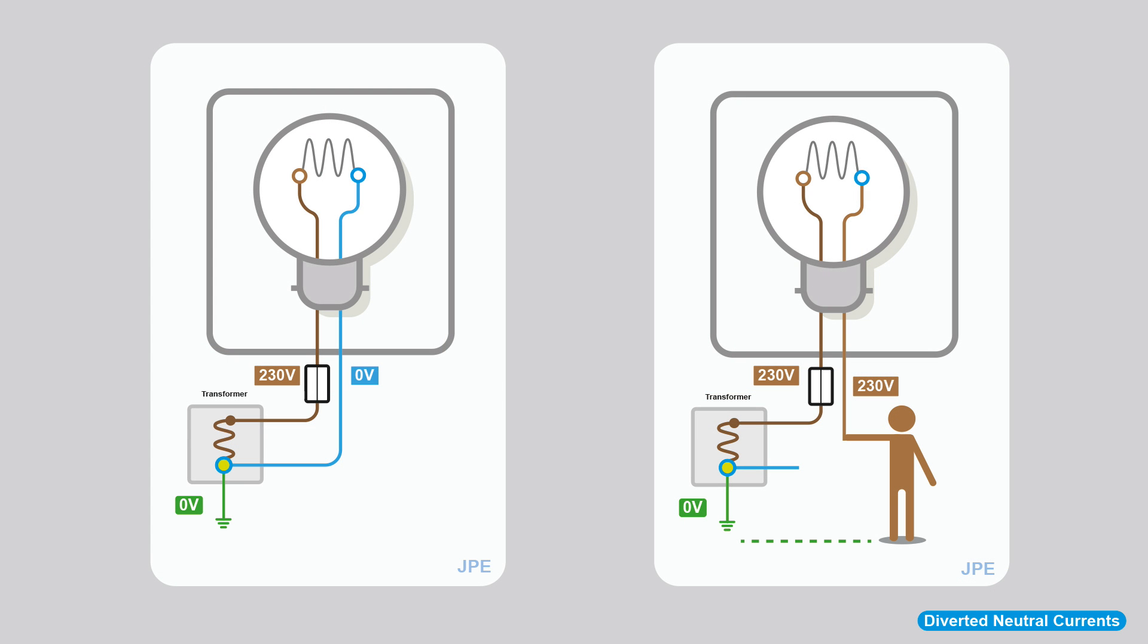So here we are back at our simple circuit. The live goes through the protective device, through the load, through the element, and back down the neutral to the transformer. If this neutral conductor breaks, the light will stop working because there's no return path. But if you follow the flow of power through the element, back down what was the neutral, which is no longer a neutral because it's not connected to the neutral point, this is just an extension of your live going through the element.